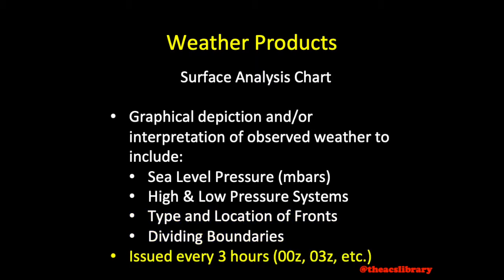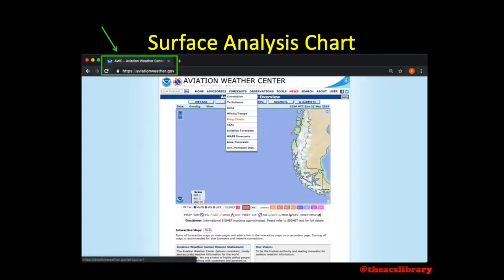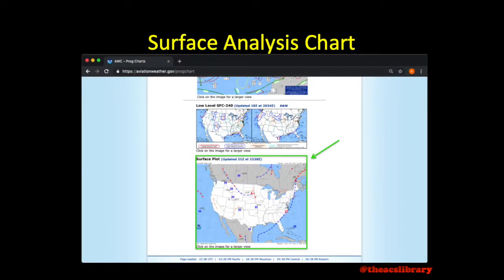Surface analysis charts are issued every three hours beginning at 0000 Zulu. To access a current surface analysis chart, go to www.aviationweather.gov and under the forecast tab, select prog charts and scroll down to the last map on the page labeled surface plot. This is the one that you'll want to use.